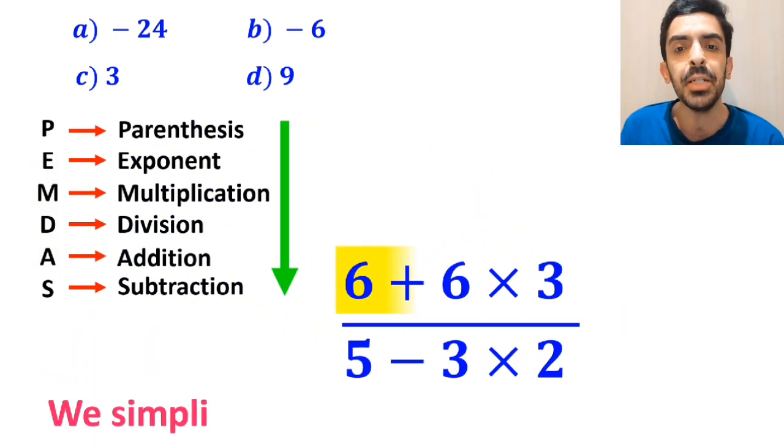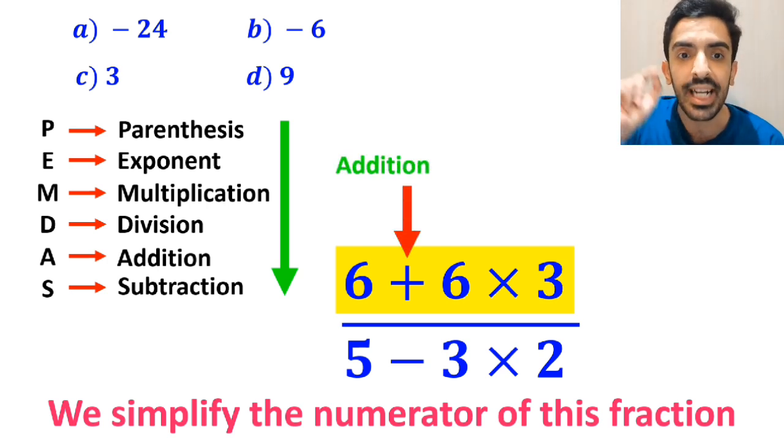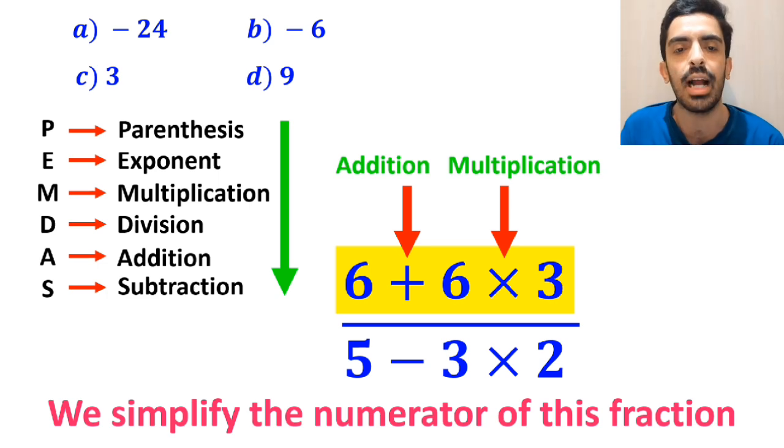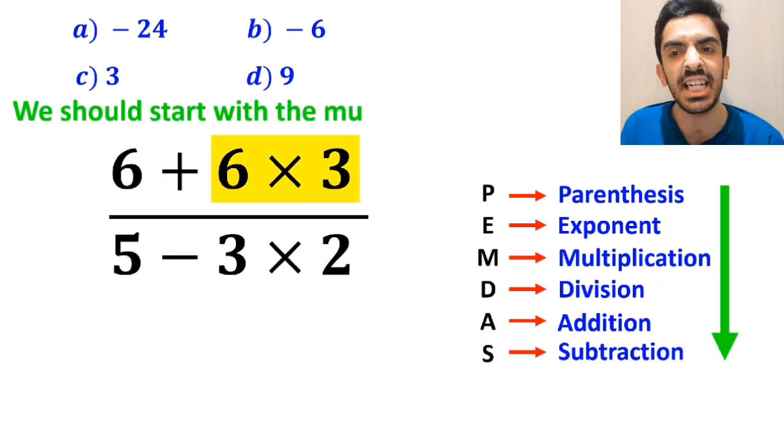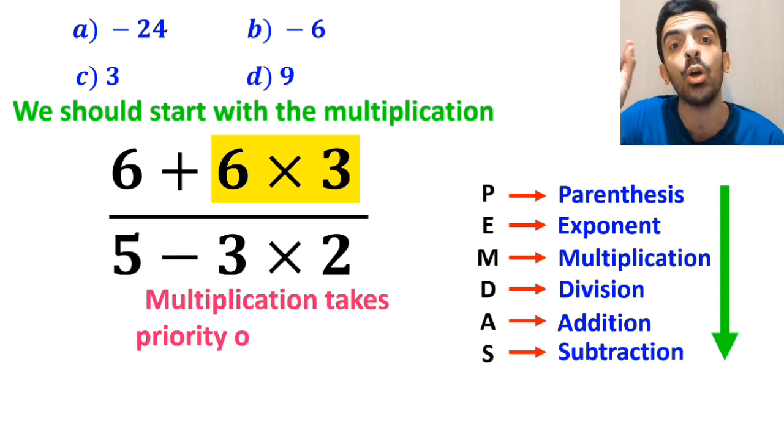Okay, first we simplify the numerator of this fraction. As you can see on the screen, in the numerator, we have an addition sign followed by a multiplication sign. We should start with the multiplication between 6 and 3, because according to the PEMDAS rule, multiplication takes priority over addition.